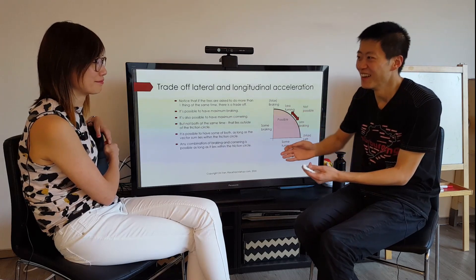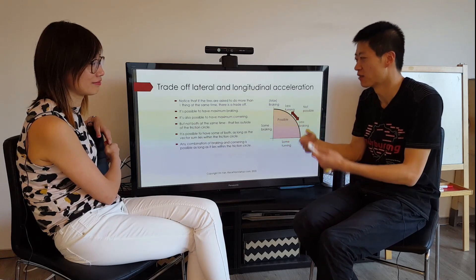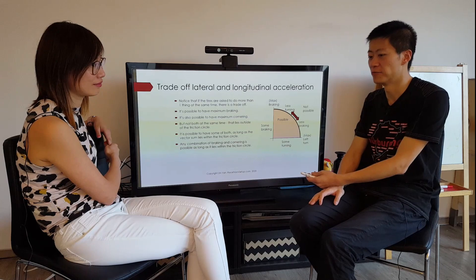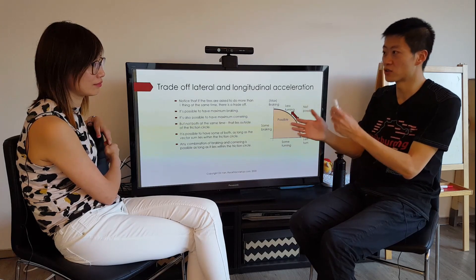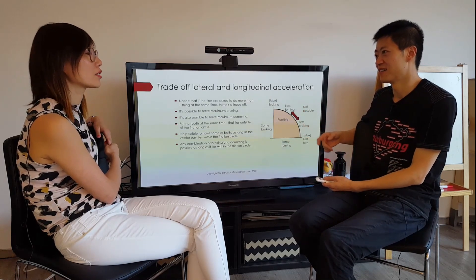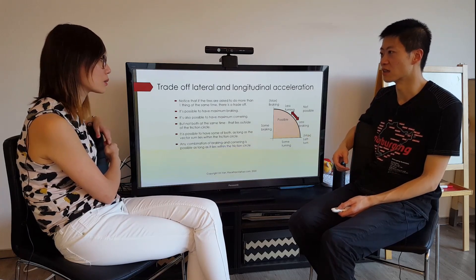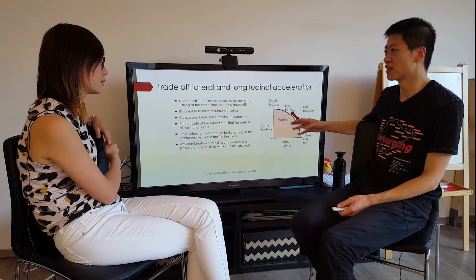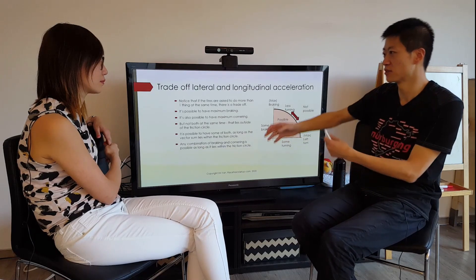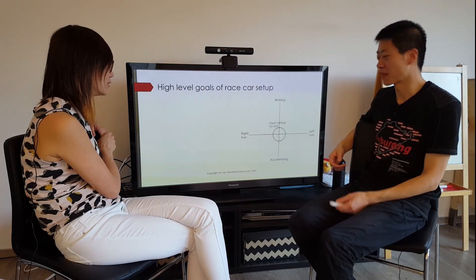Why is this important? First of all, it's important to understand this so you don't ask too much from the tires. But it also means the driver is able to influence the oversteer and understeer of the car by either accelerating or braking. So this is not only about the setup of the car — it's also about handling the car, because if you're cornering and the driver suddenly forces the car to brake or accelerate, things change.